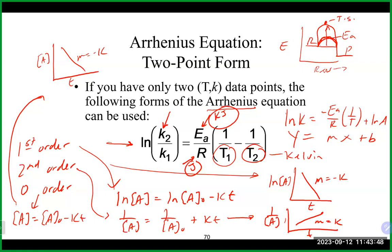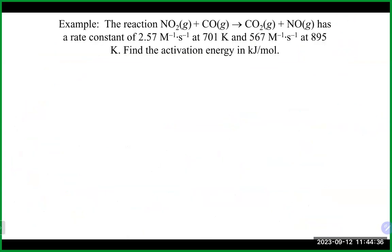There are a few different versions of the two-point Arrhenius equation — you may see it written differently in the lab manual depending on how terms are distributed. The positions of T₁ and T₂ may change depending on which version is used. It's recommended to stick with one consistent version to avoid confusion.